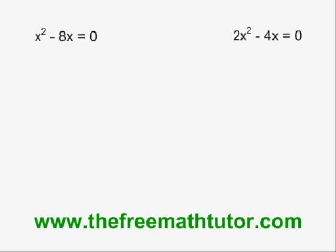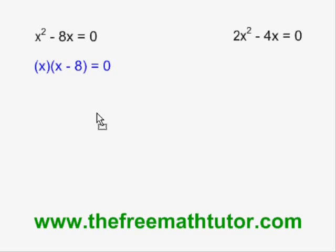If we are asked to solve a quadratic equation by factoring, one of the factoring methods we might need to use is the common factor factoring method. In both of these examples, we will use common factor. In the example on the left, the common factor is x. And if I factor x out of the expression, I get x times x minus 8 equals 0.